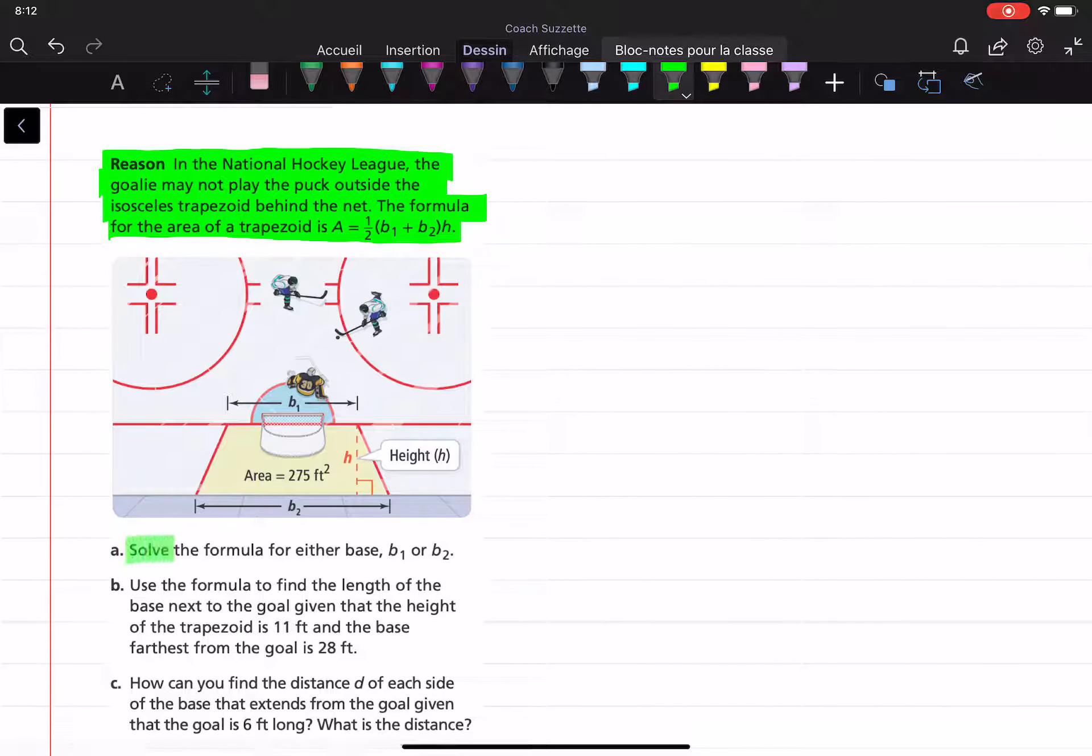Part A: Solve the formula for either base b₁ or b₂. Okay, so we can see in our diagram here, here is the isosceles trapezoid.